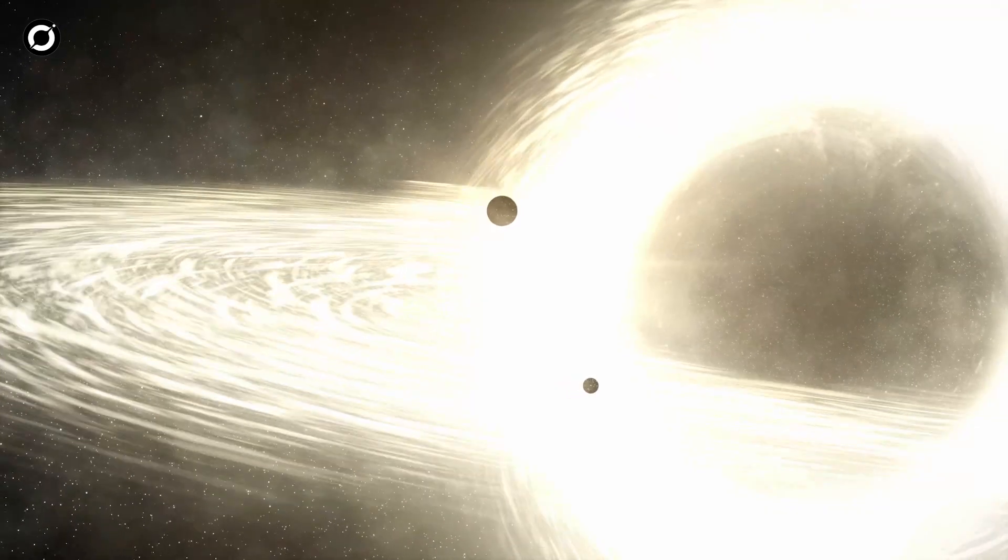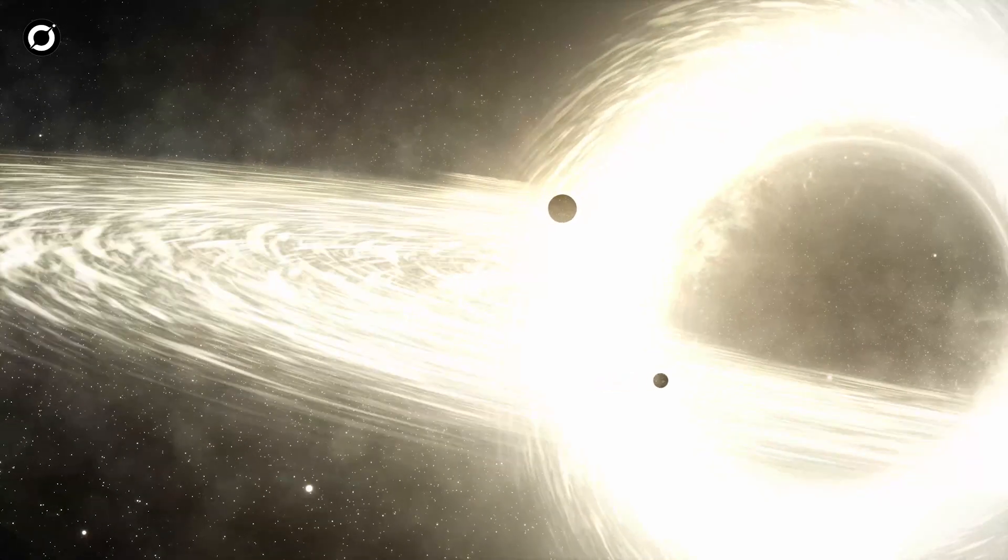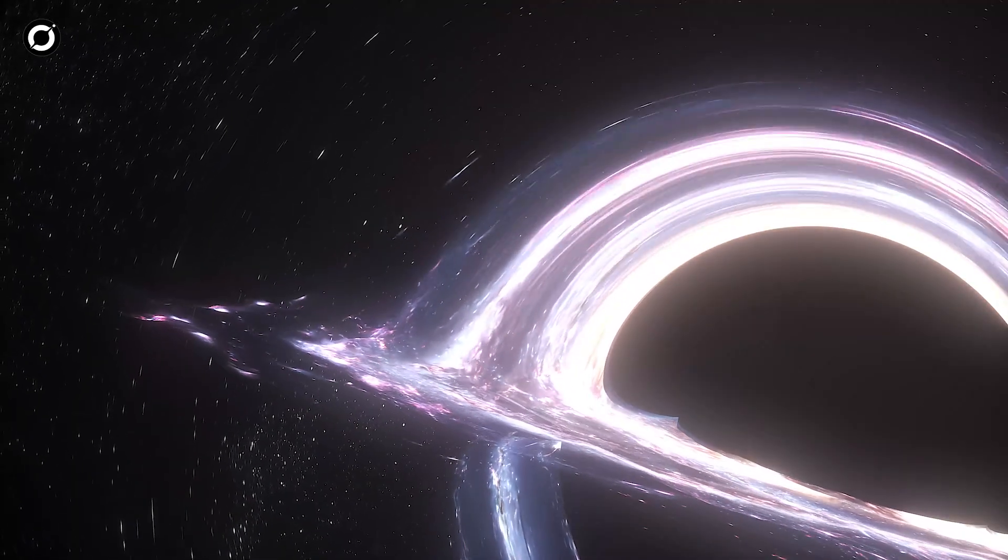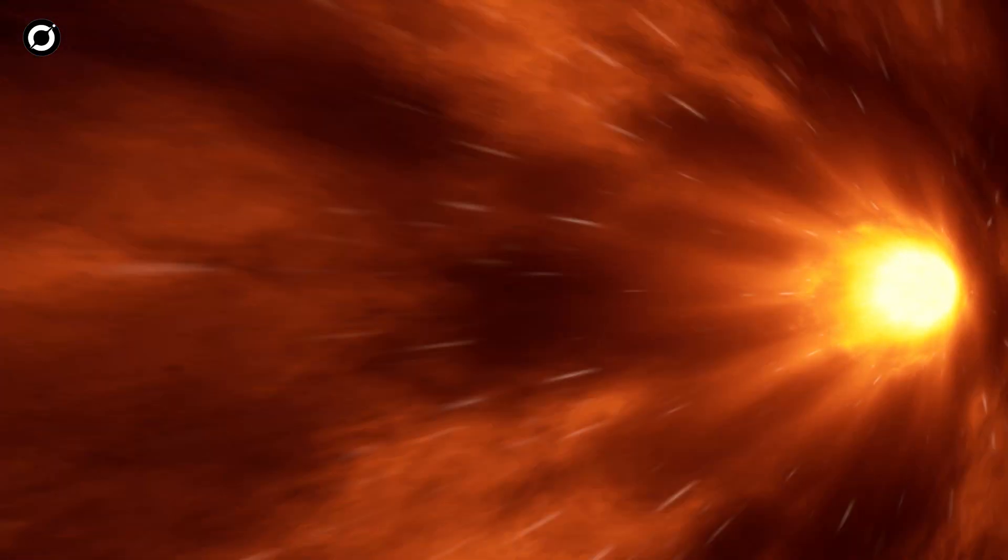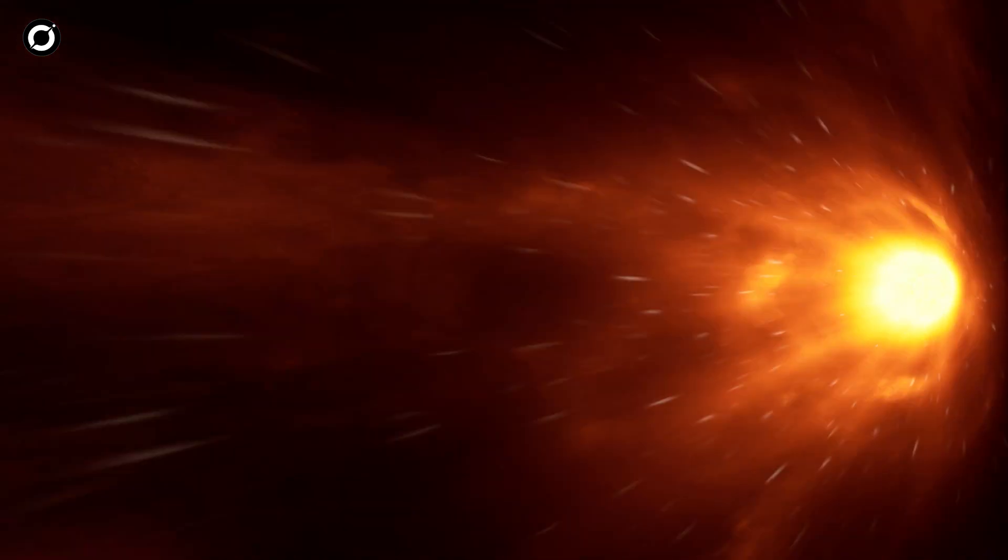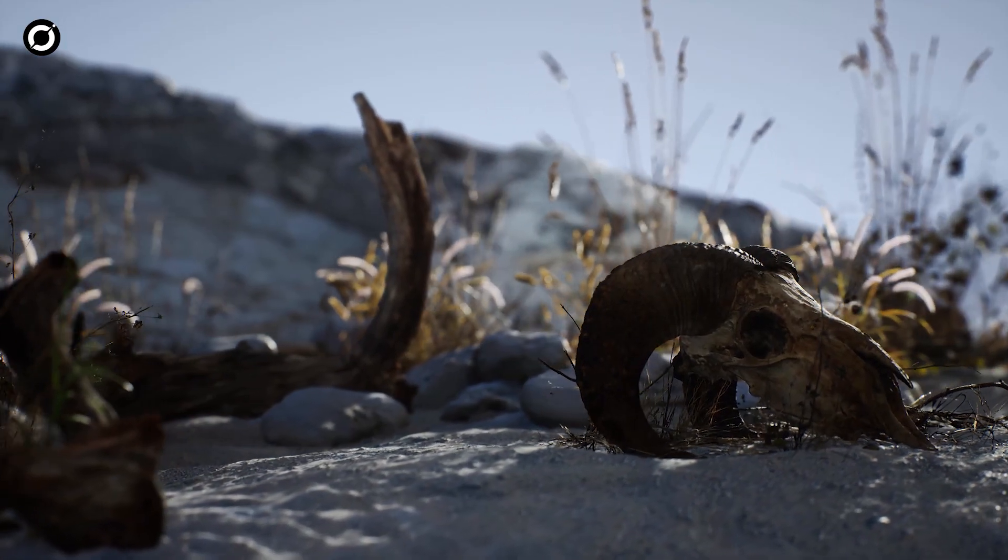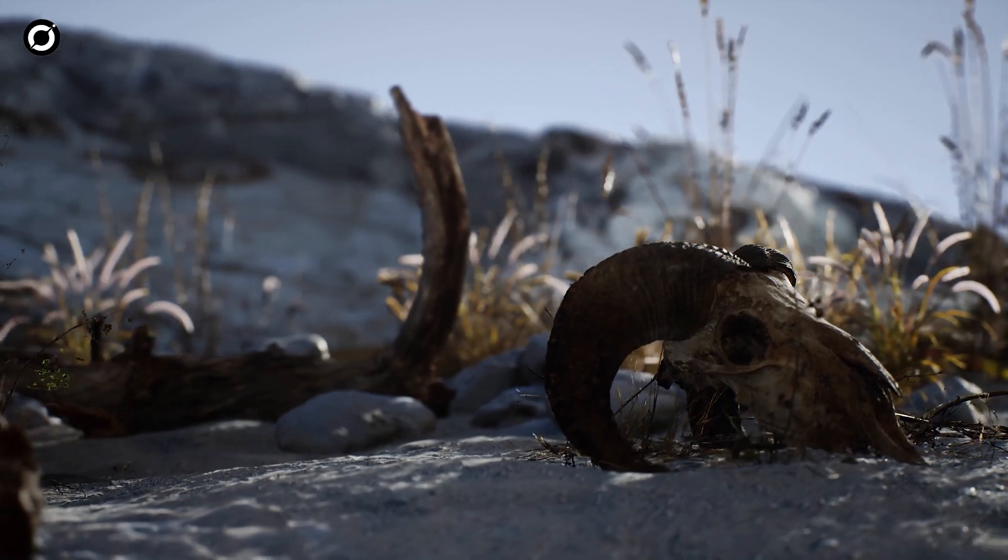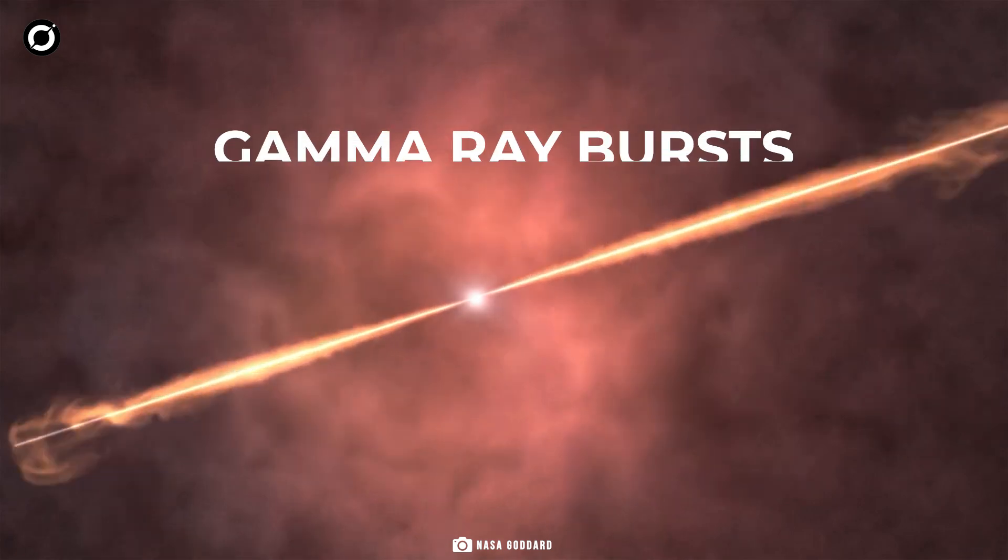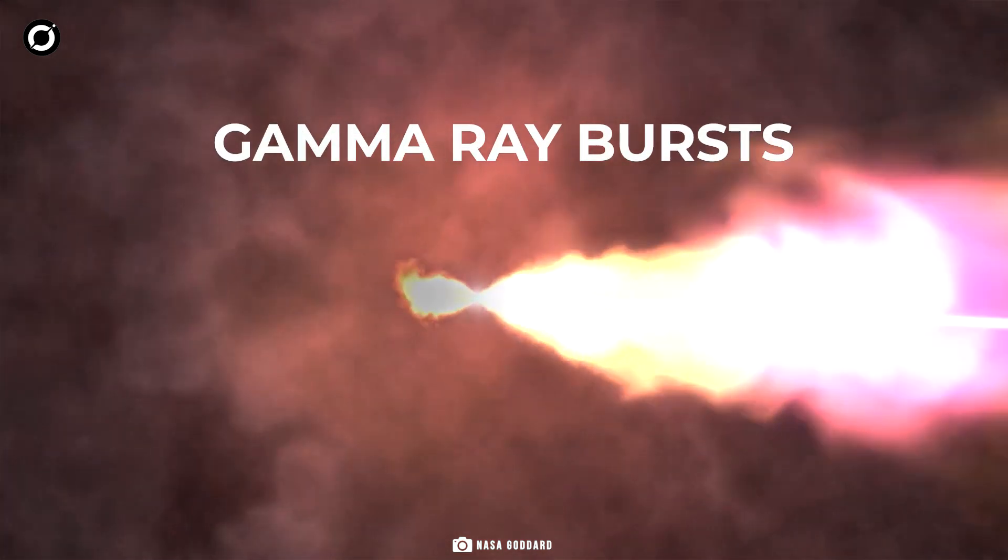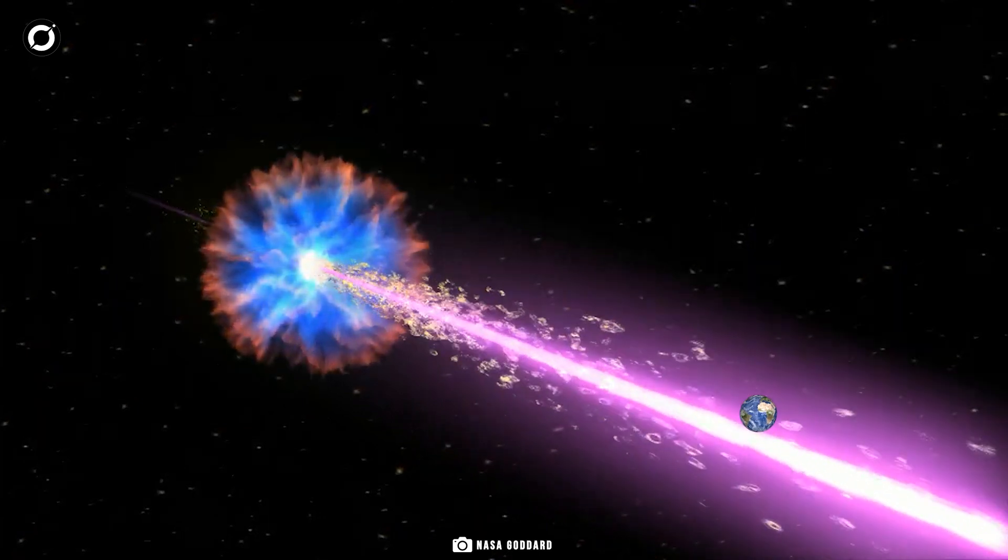If the black hole was actively pulling in nearby matter, like gas or dust, it would create an accretion disk around itself. This disk would become very hot and emit X-rays and other high-energy radiation, which could be harmful to Earth, possibly sterilizing the planet before any direct contact with the black hole. If the black hole were feeding actively, it might release powerful gamma-ray bursts. A nearby gamma-ray burst could irradiate Earth, potentially leading to mass extinction.